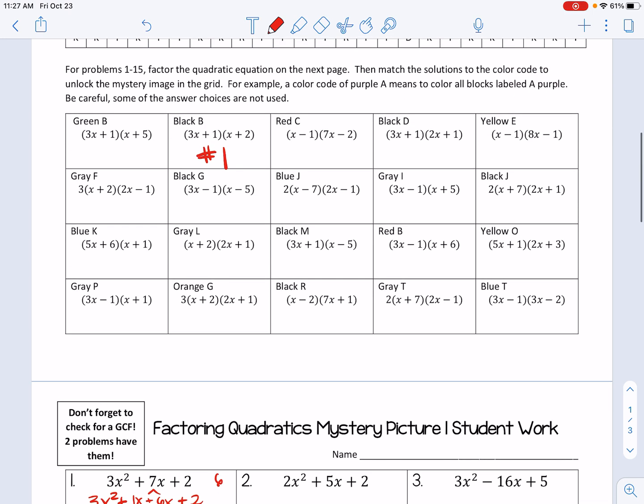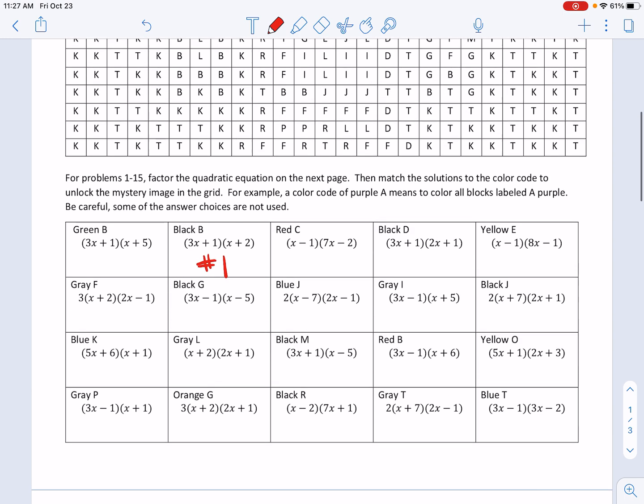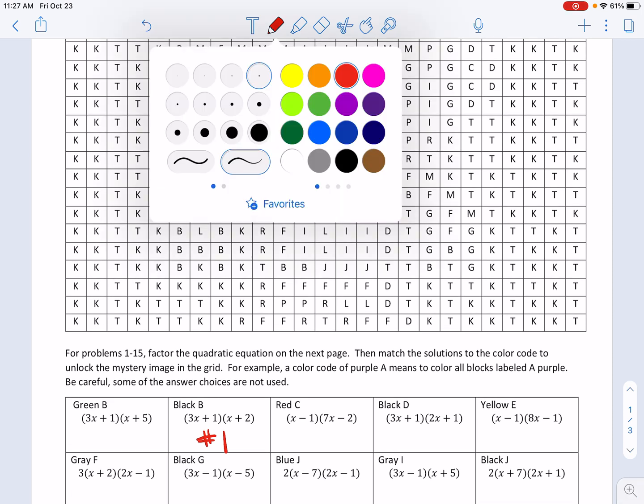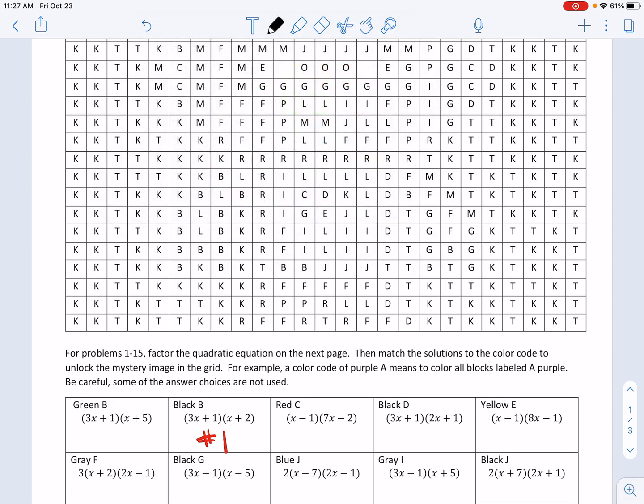So that says that I'm going to color black B. So that means everywhere I see a box that has a B in it, I'm going to color it black. So like for example, I see some Bs here, I see some Bs here, some Bs here, and here.